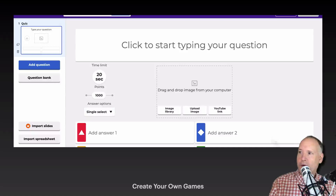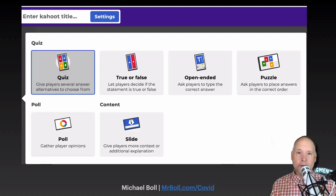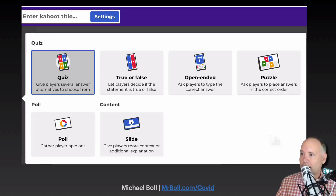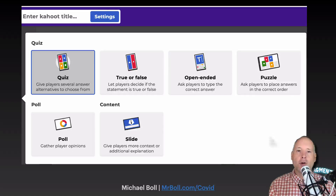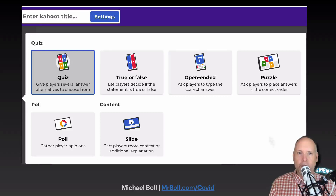With Kahoot, you can create your own types of games. Now these games might look like this — it might be a quiz. You could do true-false, open-ended, puzzles, polls, or if you have your own slides, you can insert your own slides and put your own quiz questions in there if you want to, or just do other things with your own slides to make it more interesting.